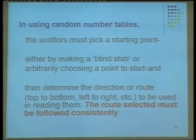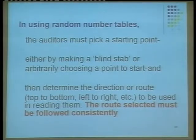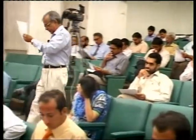Moving to the second row, we would reject a number like 8692 because it is not within our invoice number range. So we reject it — it is simply not our invoice number. This is how the random number table process works in practice.